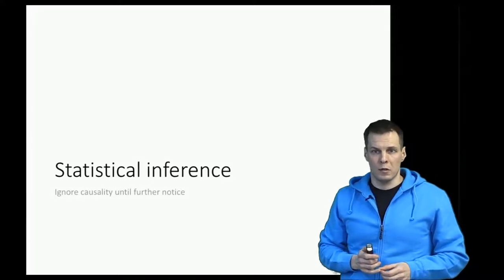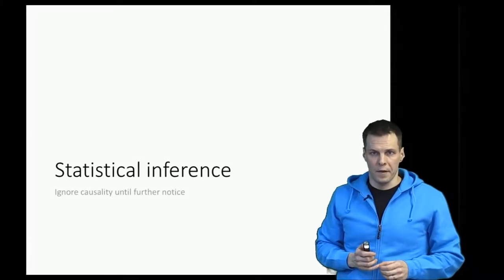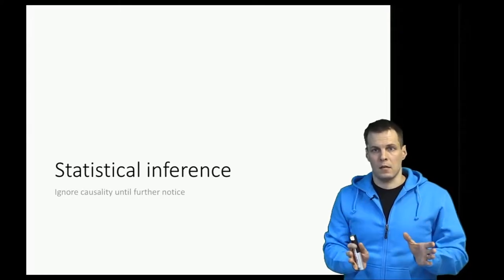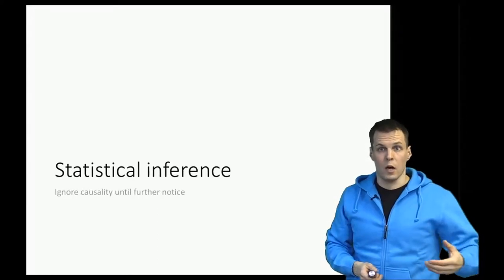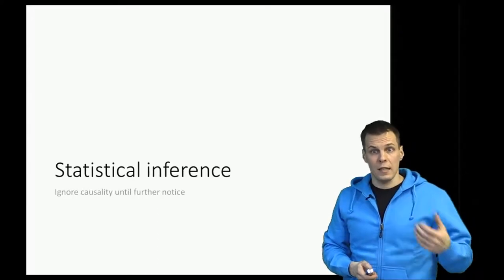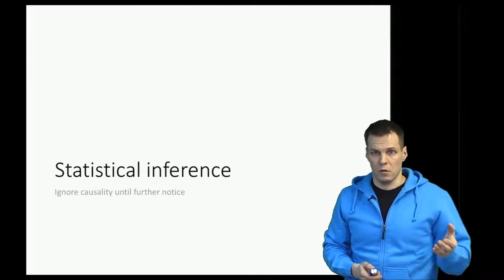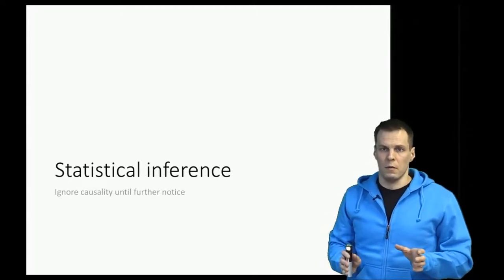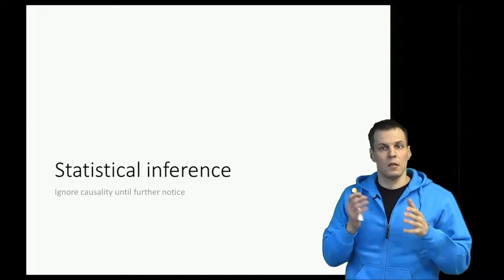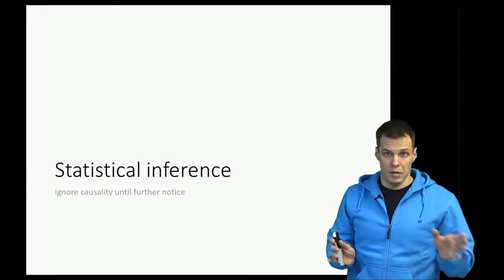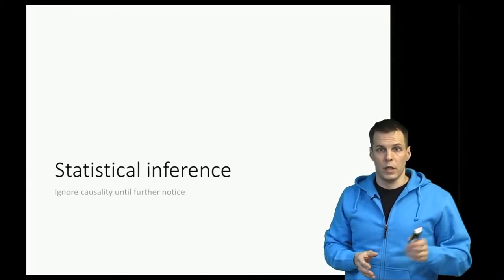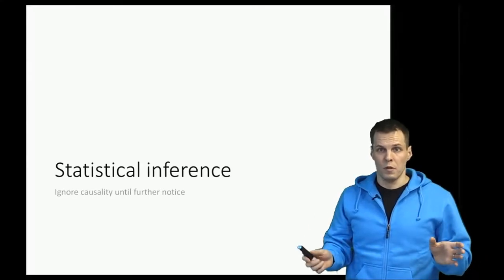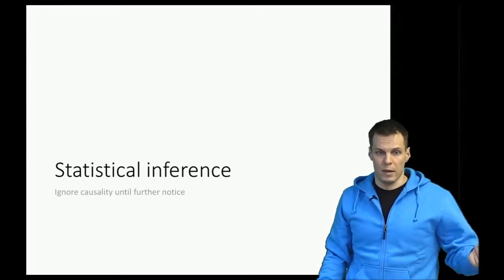Now we'll start talking about statistical inference, which refers to the task of making some kind of statistical claims about the population. We don't yet discuss causality or causal claims, but just making claims that there is an association between two variables or a difference between two groups in a population based on sample data.